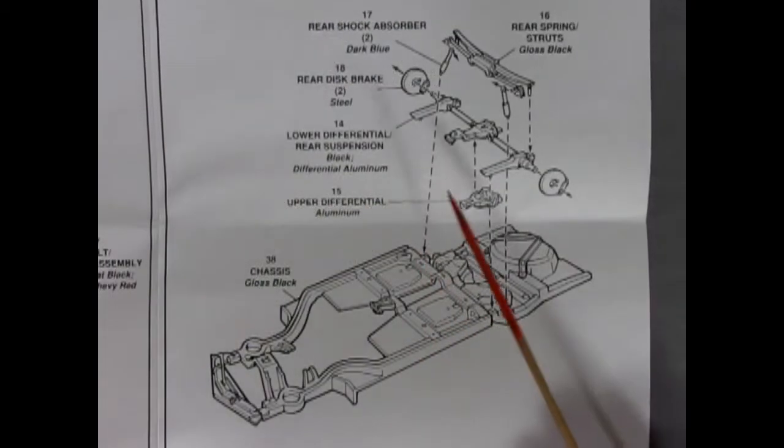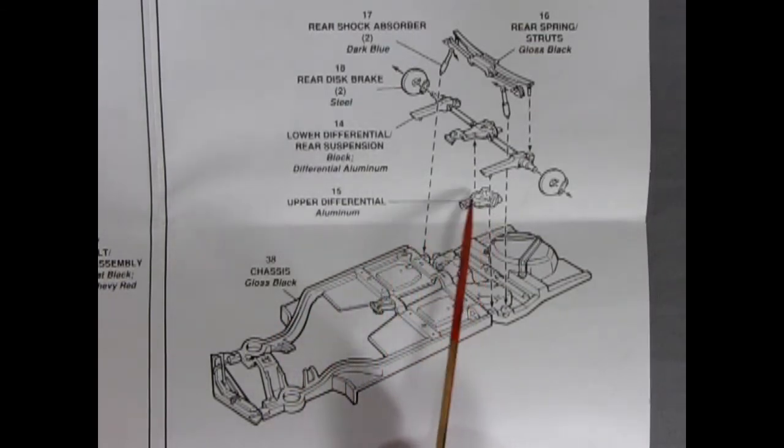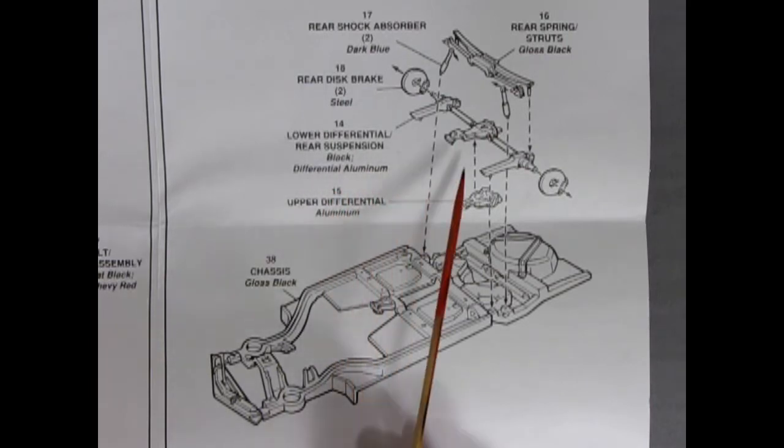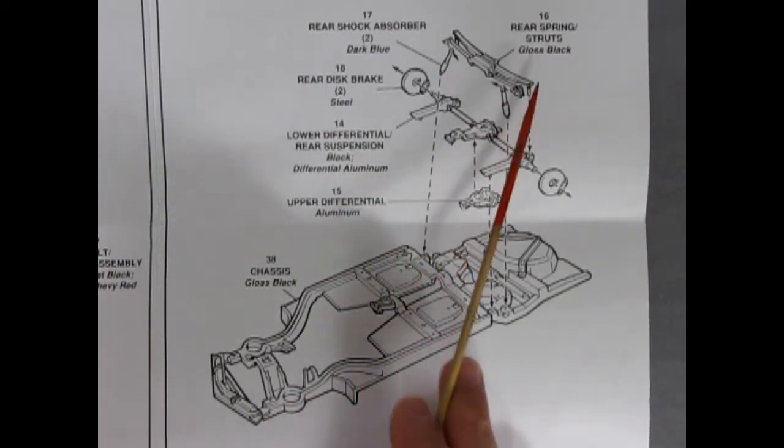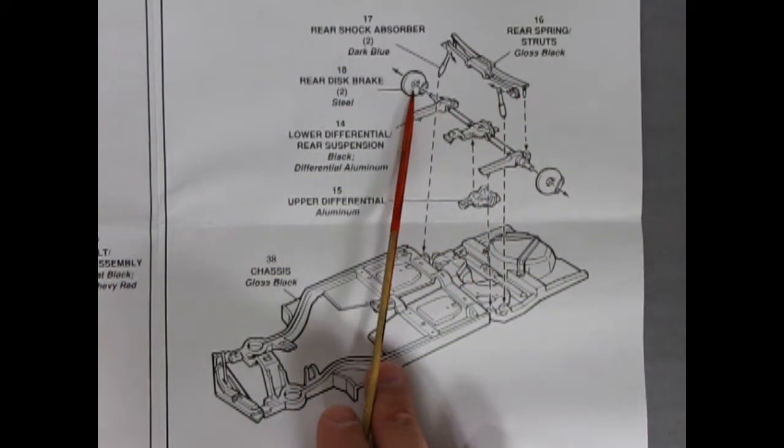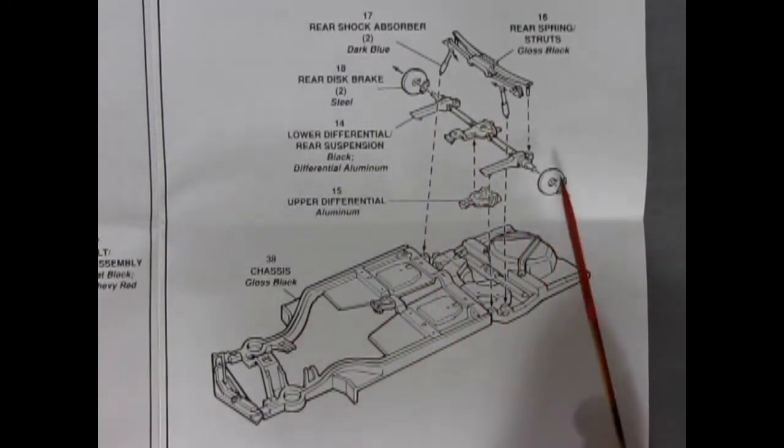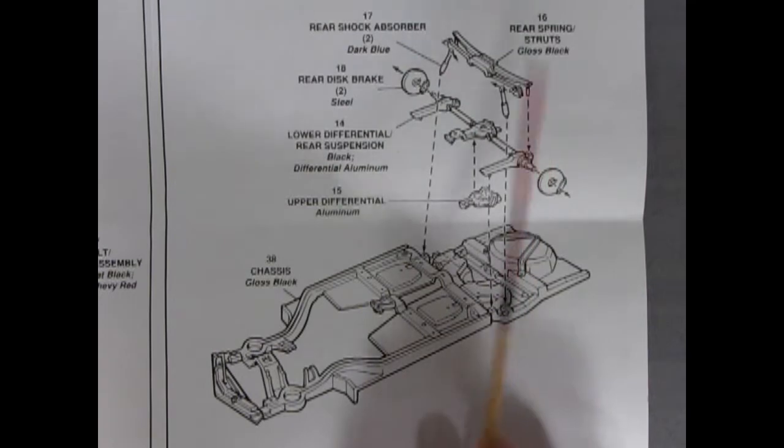Now with the engine out of the way we get into our rear suspension and chassis. So here we have our chassis pan which it says to paint gloss black. The upper differential is aluminum and the lower differential and rear suspension is black with an aluminum differential in here. Then we've got our rear springs and struts and our disc brakes in the back as well as our shock absorbers. And this rear axle has been used in Corvette since 1963.